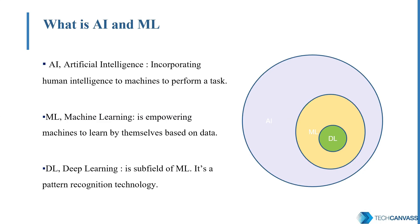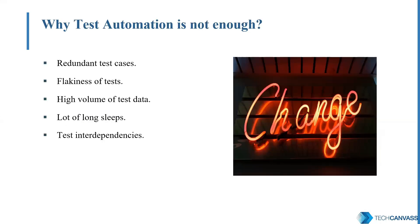DL, or deep learning, is again a subset of ML. Deep learning involves advanced algorithms which read a lot of data, identify the pattern, and provide the solution. Examples of DL include adding color to a black and white picture, and the use of chatbots. With this brief background of AI and ML, let's talk specifically in terms of test automation.